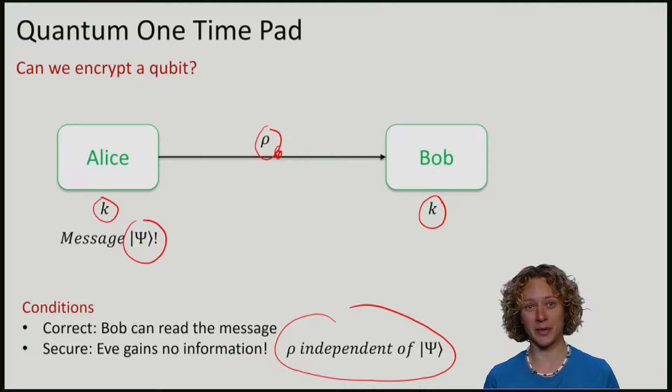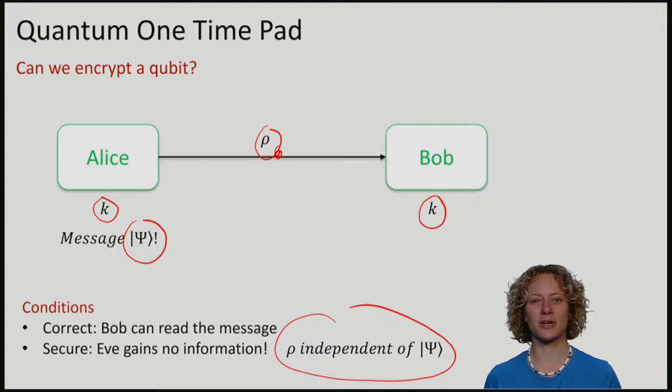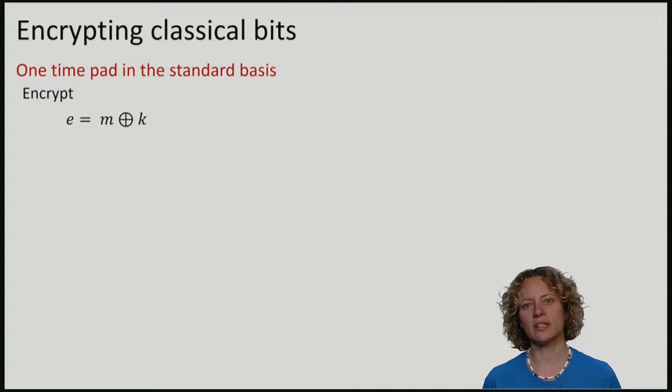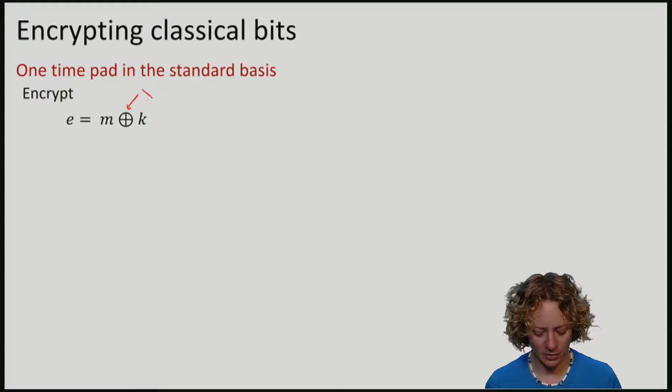Similarly to the classical one-time pad, we will now construct a quantum one-time pad. Let's briefly recapitulate what the classical one-time pad is, but this time using quantum notation. For simplicity, we will just encrypt one classical bit, or later one qubit. But it works all the same if you consider many of them.